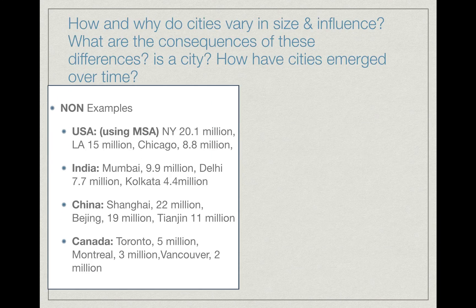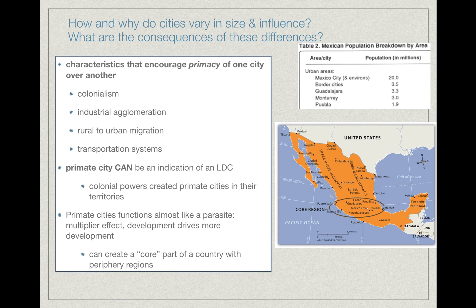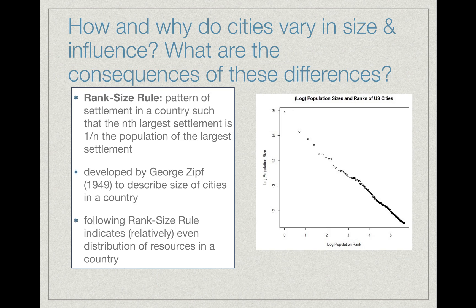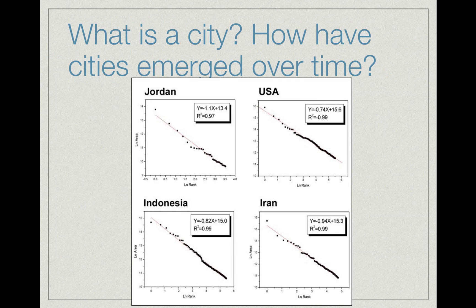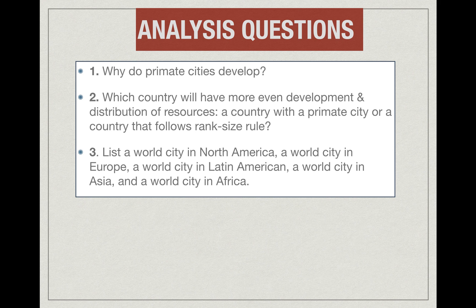Going back to what causes a primate city, we can infer that a place following rank-size rule perhaps wasn't a product of colonialism, has greater industrial distribution rather than agglomeration in one place, migrations happen on a smaller scale, and there are better transportation systems available. So rank-size rule can be an indication of a more developed country, whereas primate cities can be an indication of a lesser developed country — keeping in mind that London and Paris are important examples of MDCs that do have primate cities. That's it for primate cities and rank-size rule.